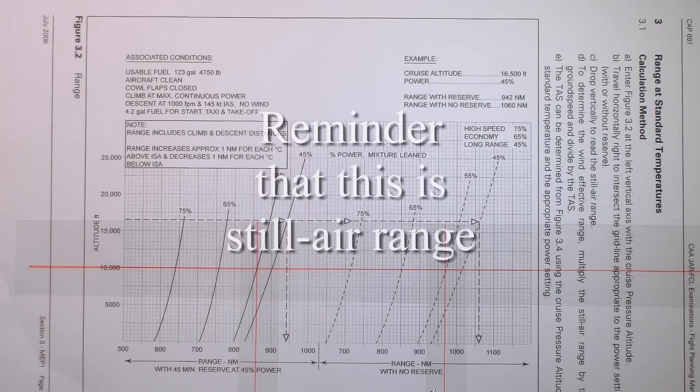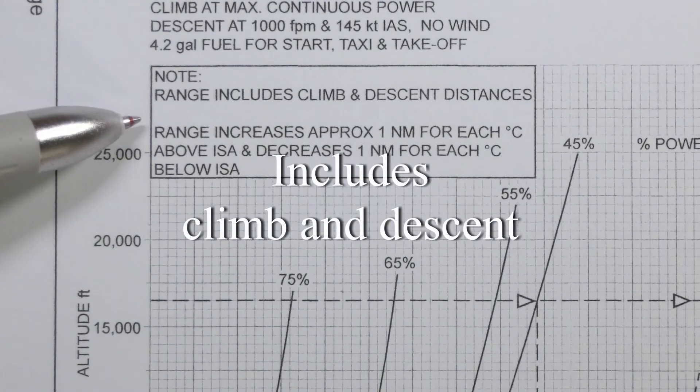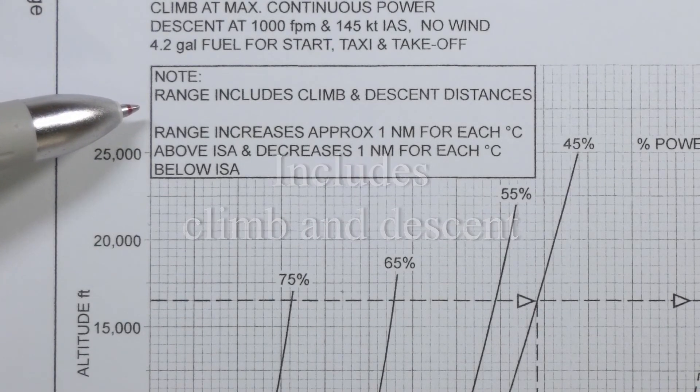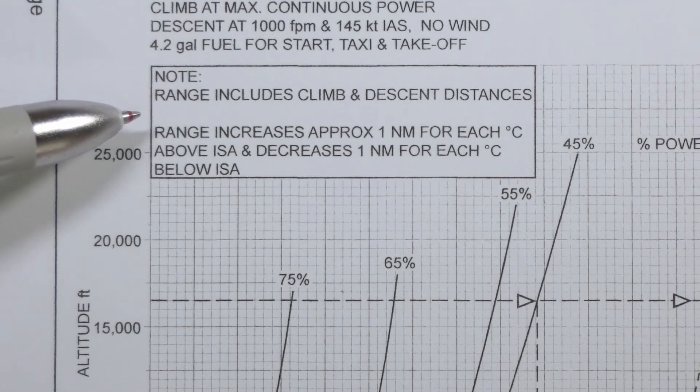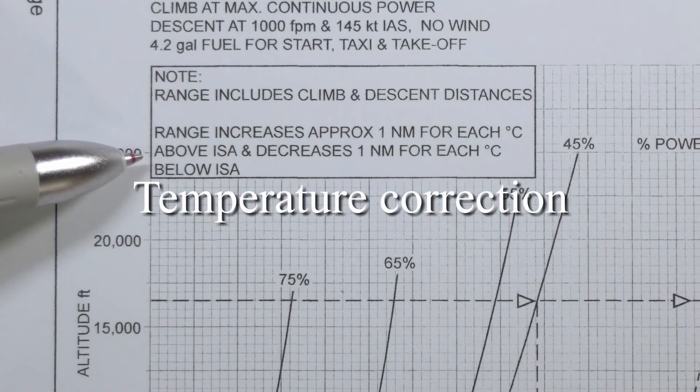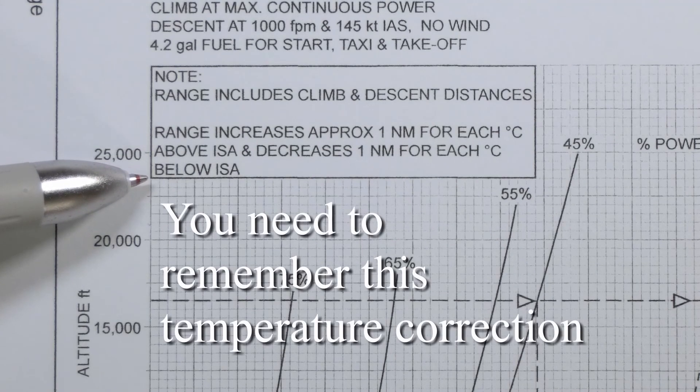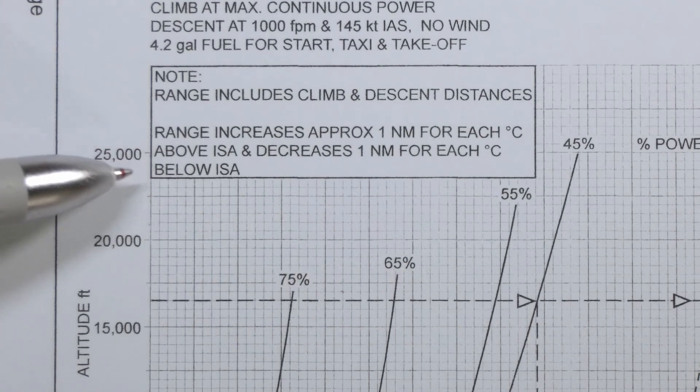A reminder that these ranges are for still air. A point to note is that this range includes climb and descent distances. This is from takeoff to landing. And the range increases by approximately 1 nautical mile for each degree Celsius above ISA and decreases by 1 nautical mile for each degree below ISA. So you might have to determine what ISA at various cruise levels is in order to make the adjustment for your flight planning.